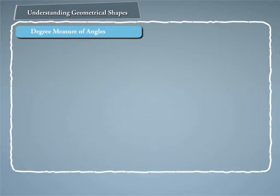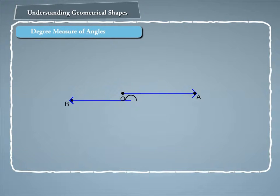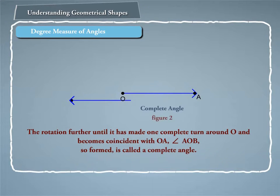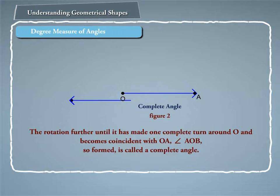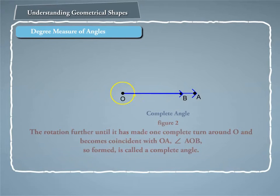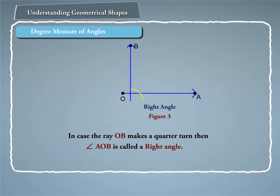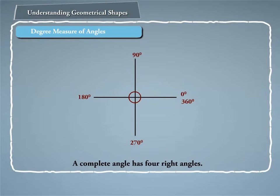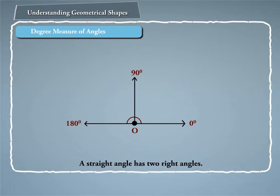Degree measure of angles. Take a ray OA. Rotate it from its initial position OA to the terminal position OB so that rays OA and OB are opposite rays — angle AOB is called a straight angle. If we continue the rotation further until it has made one complete turn around O and becomes coincident with OA, angle AOB so formed is called a complete angle. If the ray OB makes a quarter turn, then angle AOB is called a right angle. A complete angle has four right angles and a straight angle has two right angles.